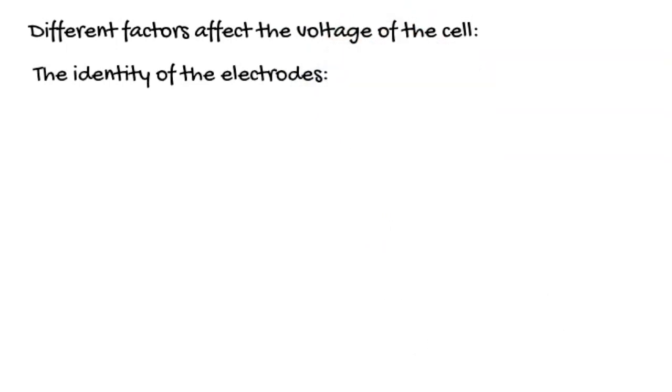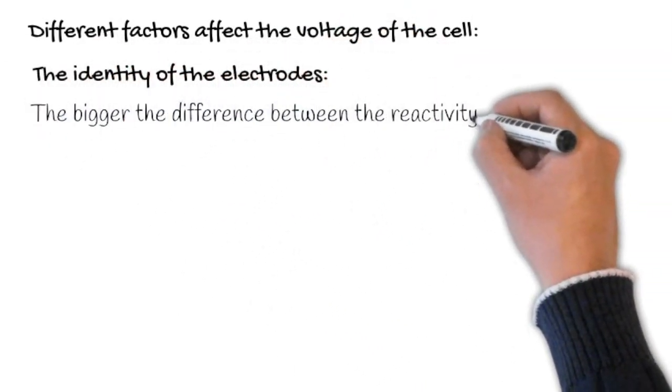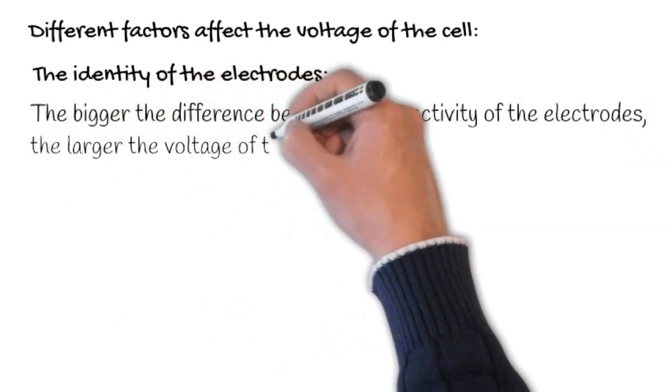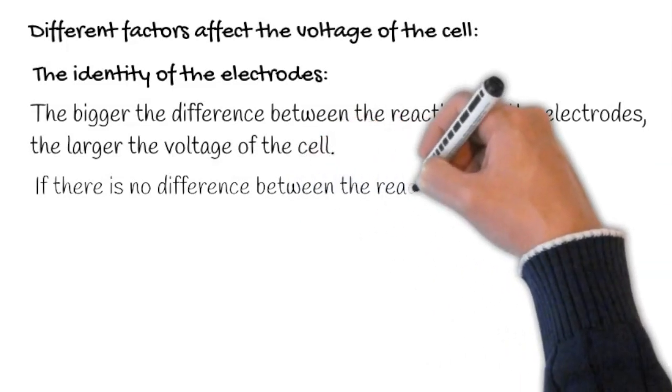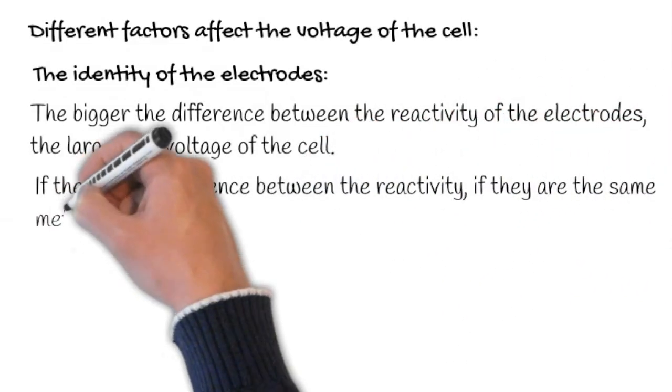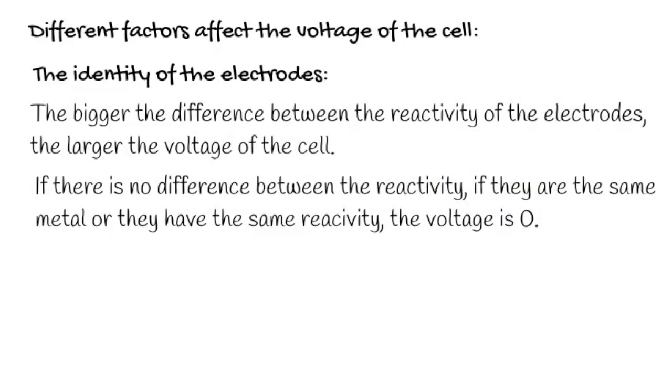The identity of the electrodes affects voltage. For example, the bigger the difference between the reactivity of the electrodes, the larger the voltage of the cell. If there is no difference between the reactivity, if they are the same metal or have the same reactivity, the voltage is zero.